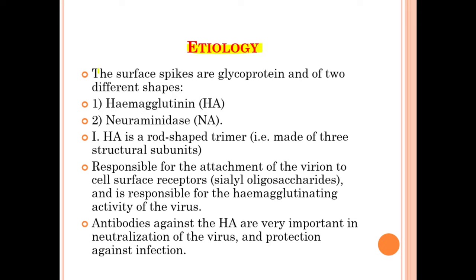The surface spikes are glycoproteins of two different shapes: the first is hemagglutinin (HA) and the second is neuraminidase (NA). Hemagglutinin is a rod-shaped trimer — made up of three different structural subunits — responsible for the attachment of the virion to the cell surface receptor, that is sialic oligosaccharides, and it is responsible for the hemagglutinin activity of the virus. Antibodies against hemagglutinin are very important in the neutralization of the virus and protection against infection.